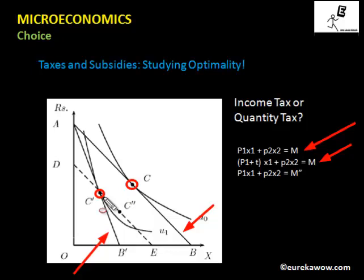Now let's look into the case of income tax. The consumer faces an income tax such that the bundle C' remains affordable. The income tax reduces income from M to M'', but the bundle C' is still affordable even though income has decreased.